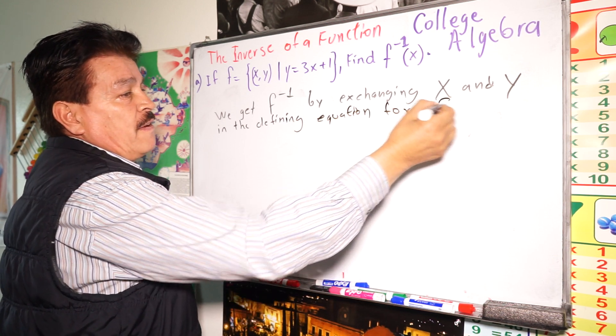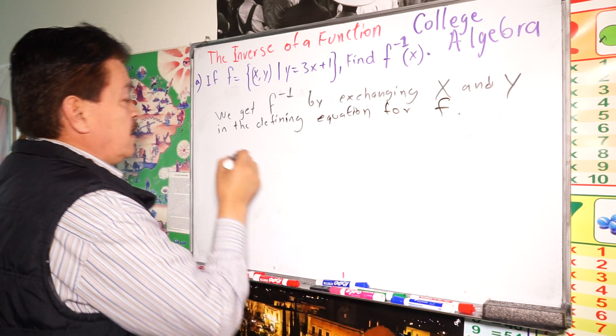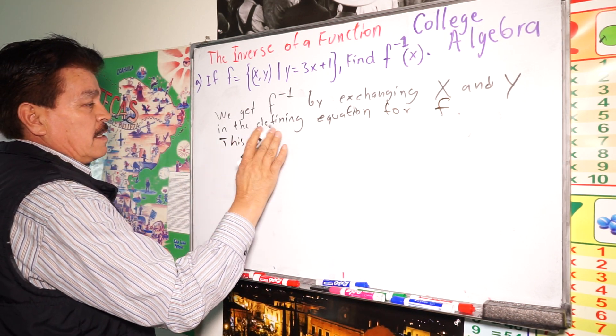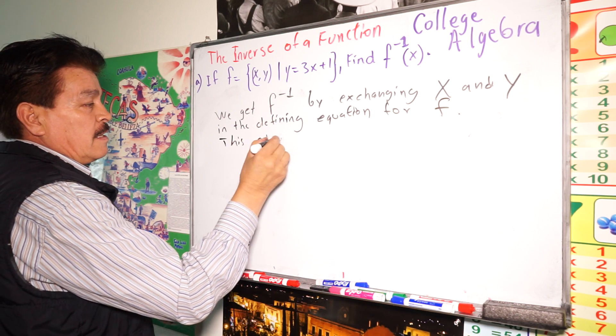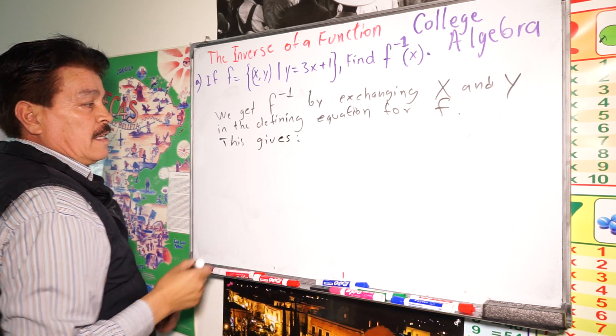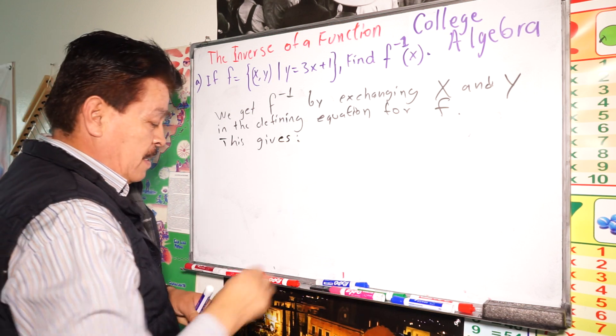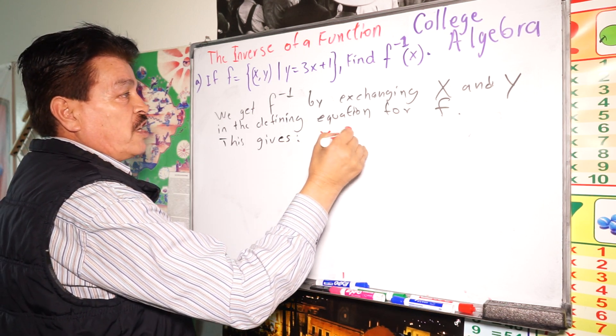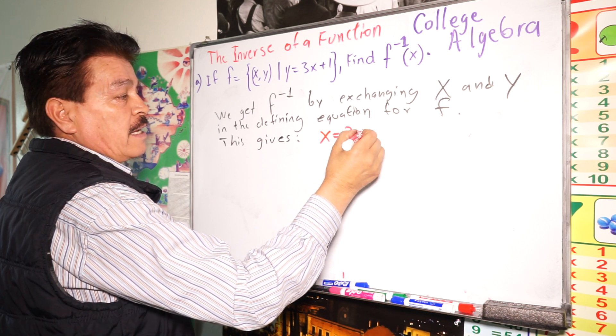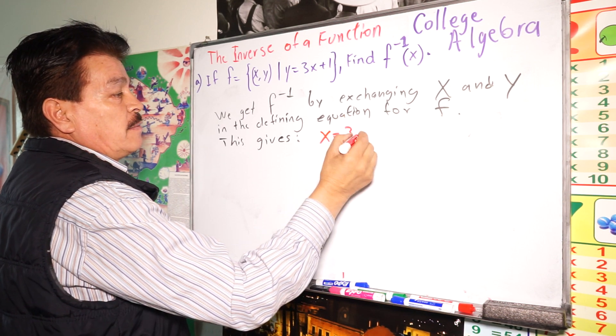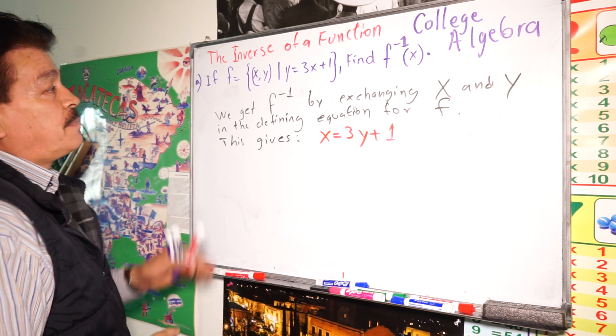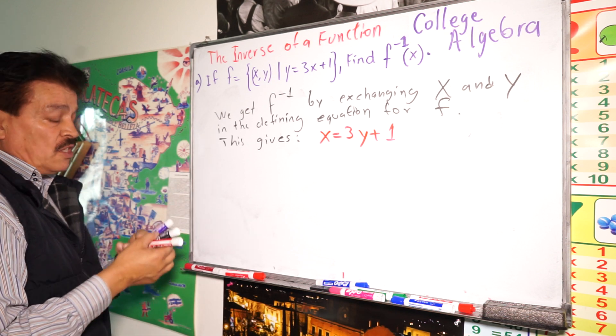Or f. So, this gives x equals 3y plus 1. All right? So, that's the first step.